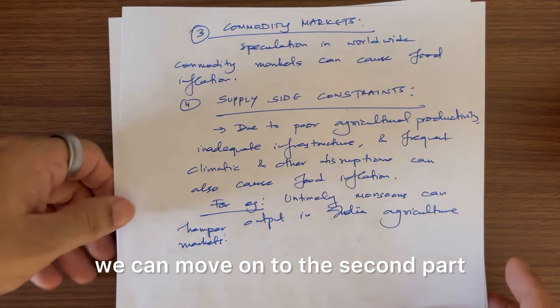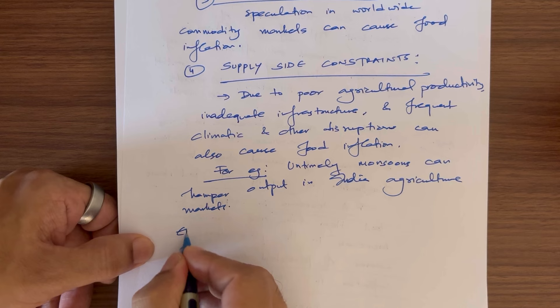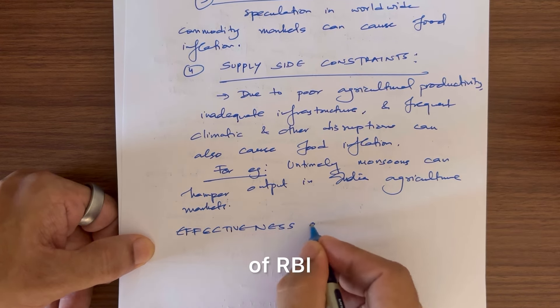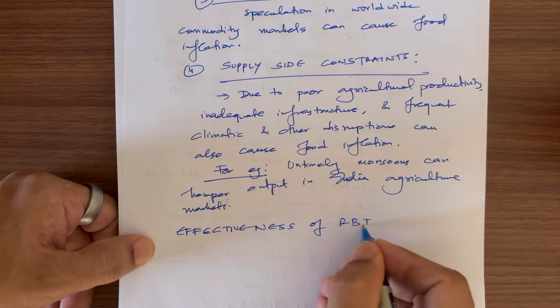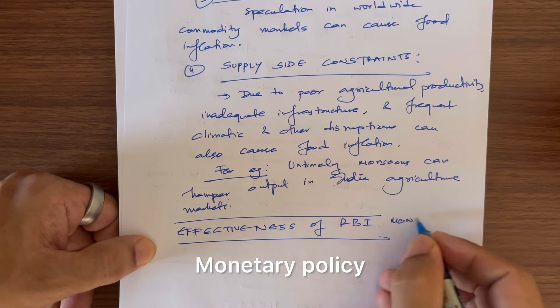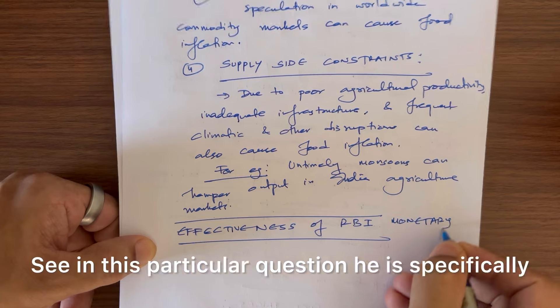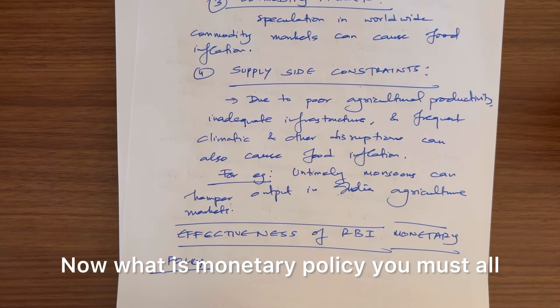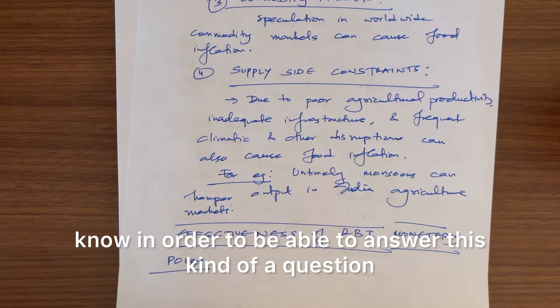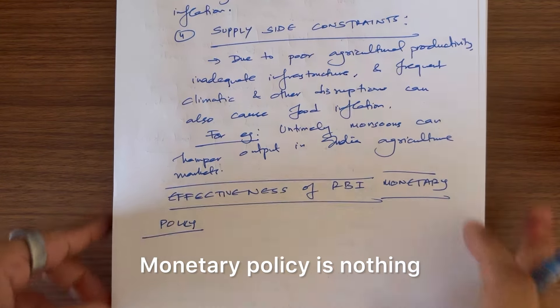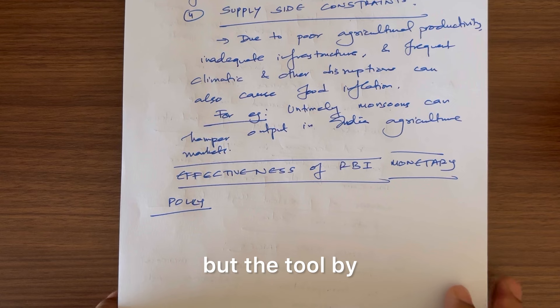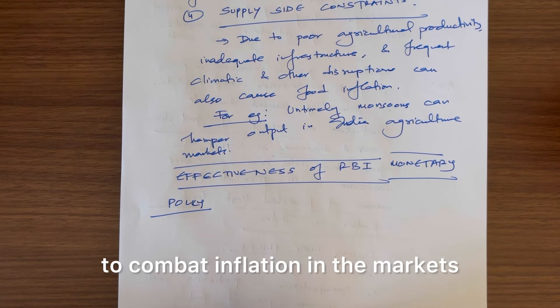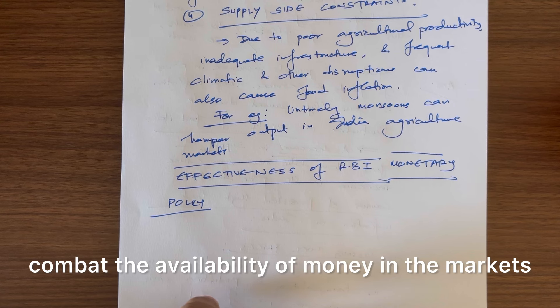In this particular question, he is specifically asking about effectiveness of the monetary policy. What is monetary policy? You must all know in order to be able to answer this kind of question. Monetary policy is the tool by which RBI can change the interest rates in order to combat inflation in the markets, combat availability of money in the markets.